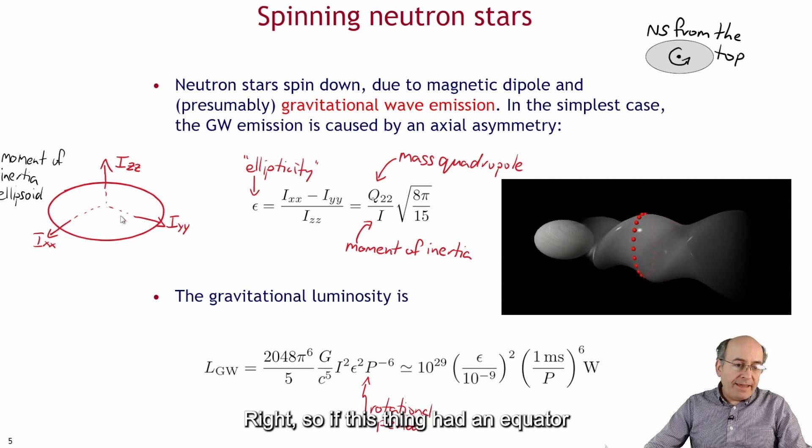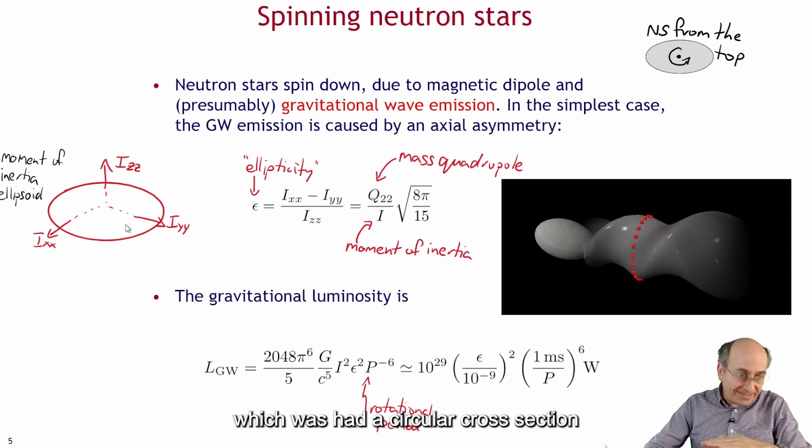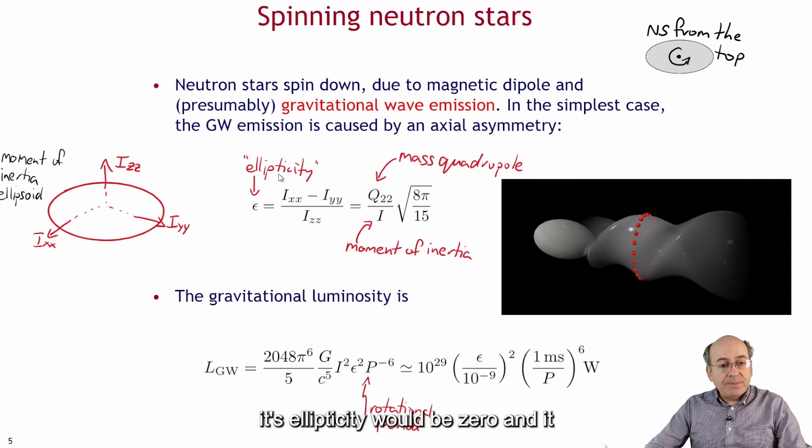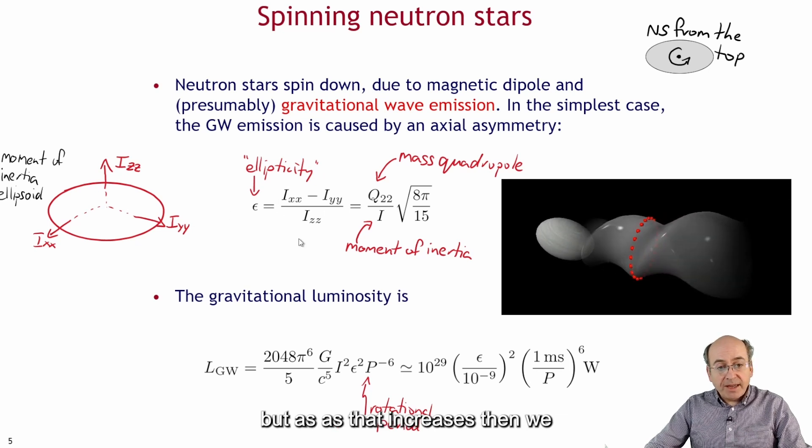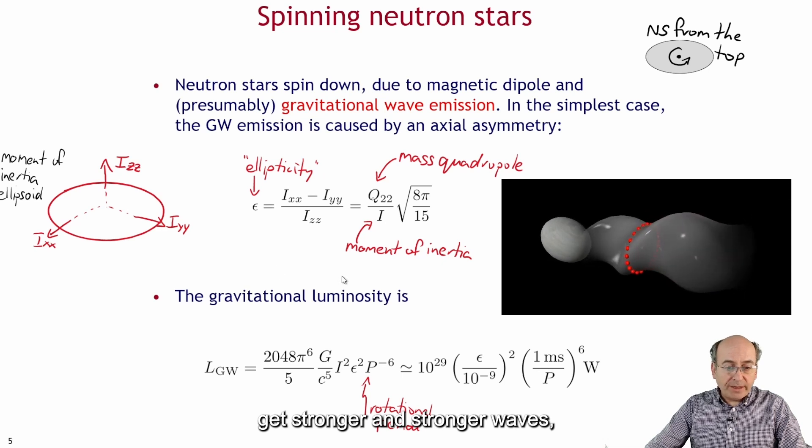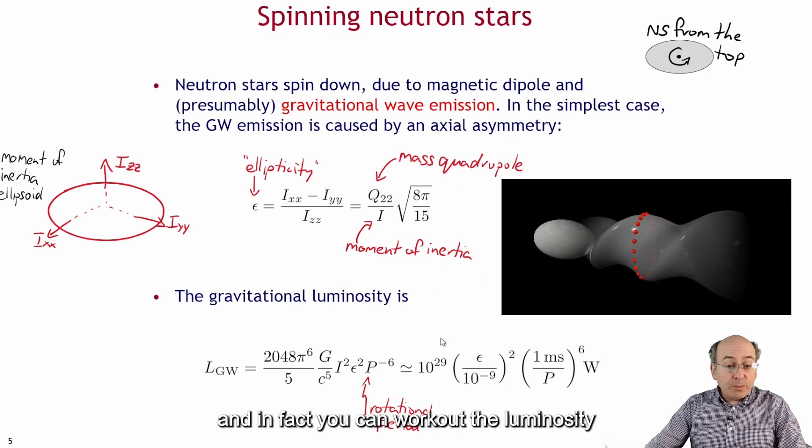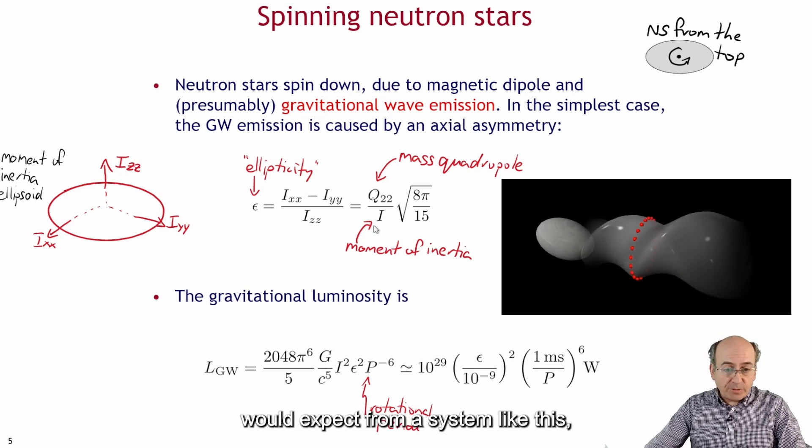It's related to the mass quadrupole and the mass quadrupole is essentially the ellipticity times the moment of inertia Izz. All these three numbers are almost exactly the same so it's not very important which one we actually have here. But the mass quadrupole is approximately I times epsilon and then there's this extra small numerical factor of the order of one.